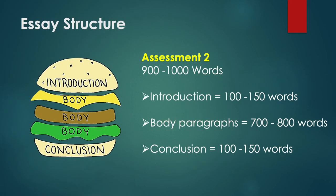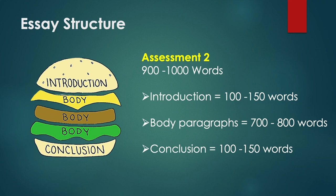Let's look at Assessment 2, the essay structure. You need to write around 900 to 1000 words. The introduction would be around 10 to 15% of your essay, the main body 70 to 80%, and the conclusion around 10 to 15%. So the introduction would be around 100 to 150 words, the body paragraphs up to 800 words in total, and the conclusion around 100 to 150 words. It looks a little bit like a burger and all parts are important. If there's no top or bottom your burger will fall apart, and it's the same with an essay. Make sure you have an effective introduction and conclusion.